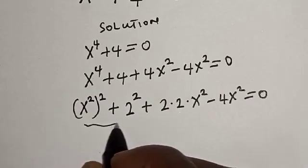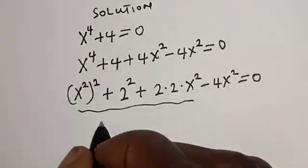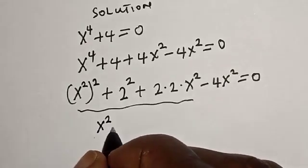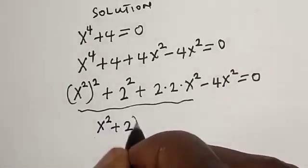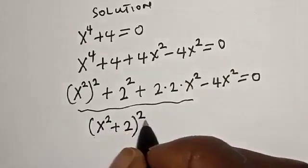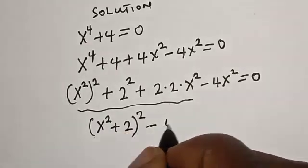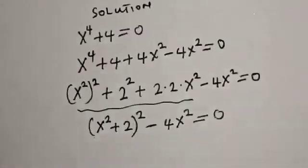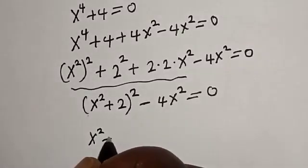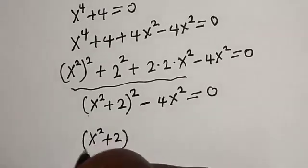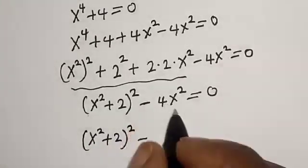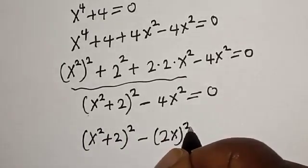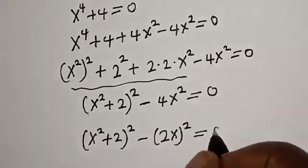Now if you look at this, the whole of this is x squared plus 2 squared minus 4x squared is equal to 0. That gives us x squared plus 2x squared minus 2x squared is equal to 0.